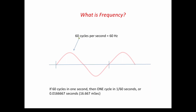First of all, what is frequency? We're going to be measuring the wall outlet in the U.S. — the frequency of the sine wave coming out of your wall outlet — and that's going to be about 60 cycles per second, also called 60 hertz. If there are 60 cycles in one second, then one cycle occurs in 1/60th of a second, or 0.016666 seconds, which is 16.67 milliseconds. It's basically this repeating sinusoidal waveform that occurs 60 times per second, and we're going to have to measure this frequency somehow.